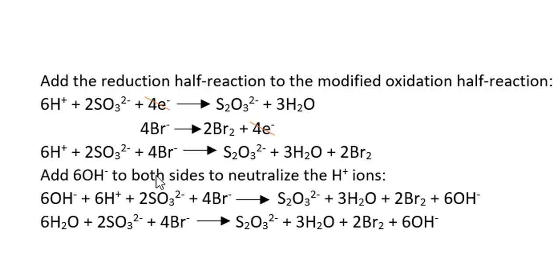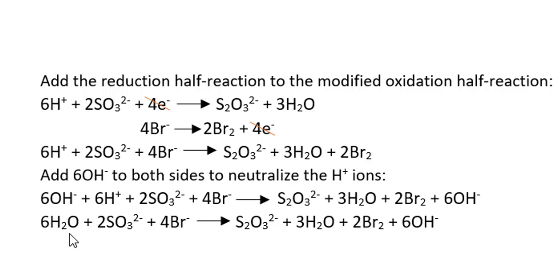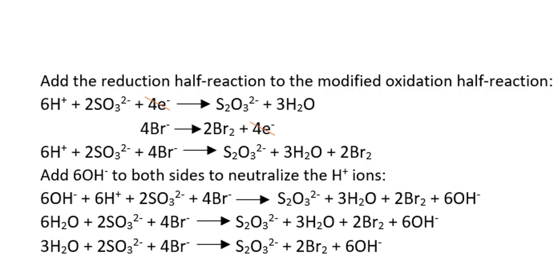The electrons cancel. Because we are in basic conditions, we add six hydroxides to both sides to neutralize the six H⁺ on the left, forming six additional waters on the left and six hydroxides on the right. Our final step is to cancel the three waters that appear on both sides to simplify the equation. I encourage you to verify the final balanced equation for mass balance and charge balance.